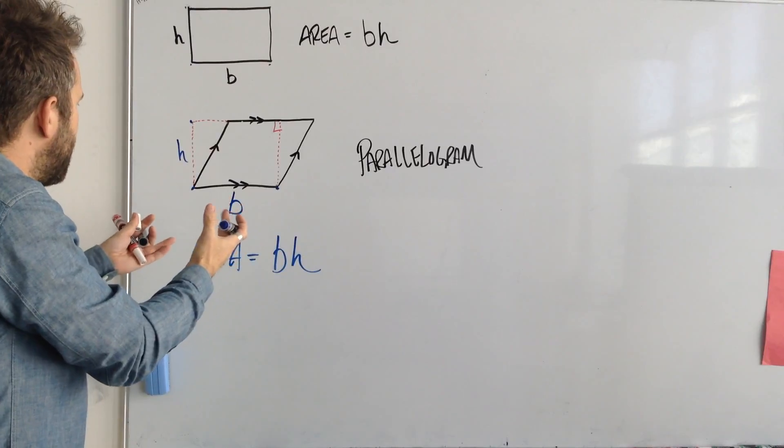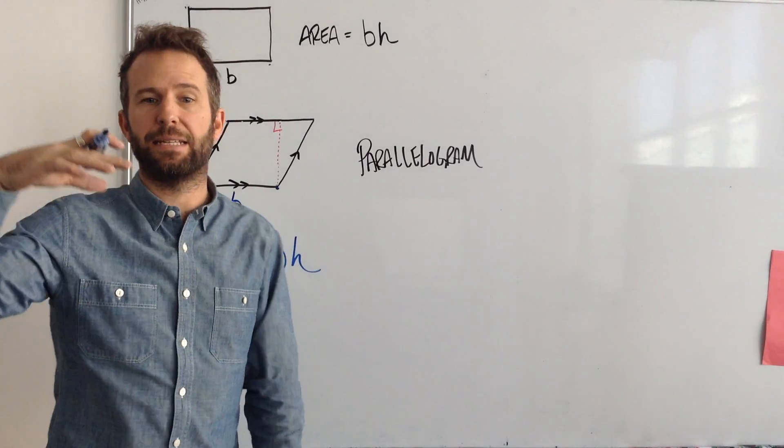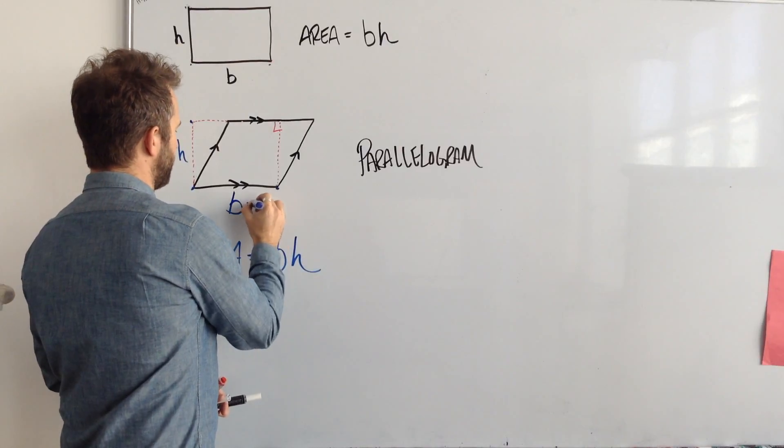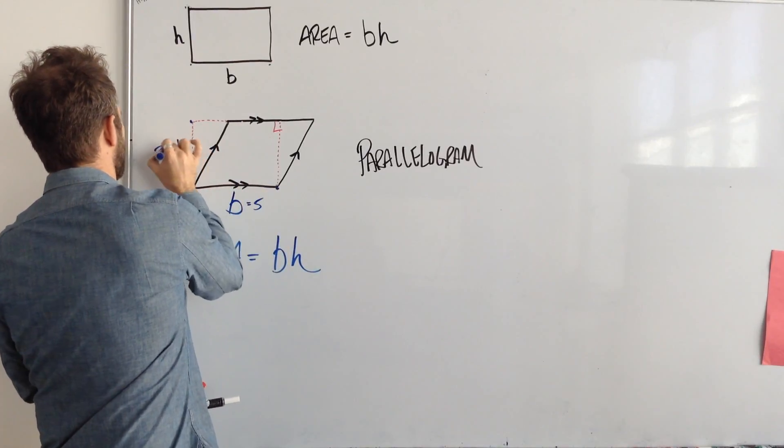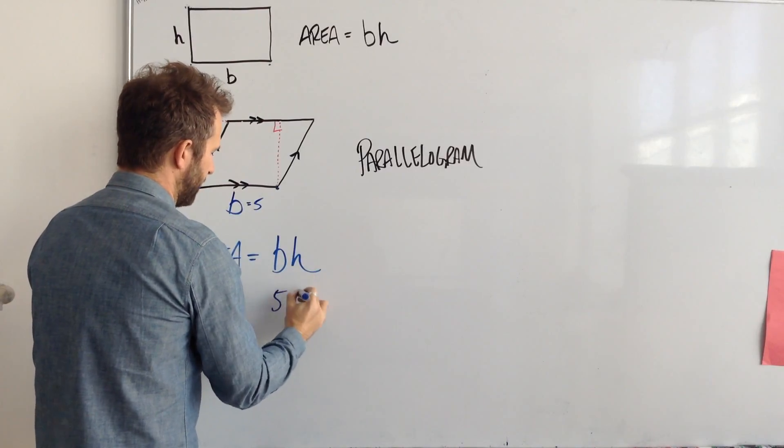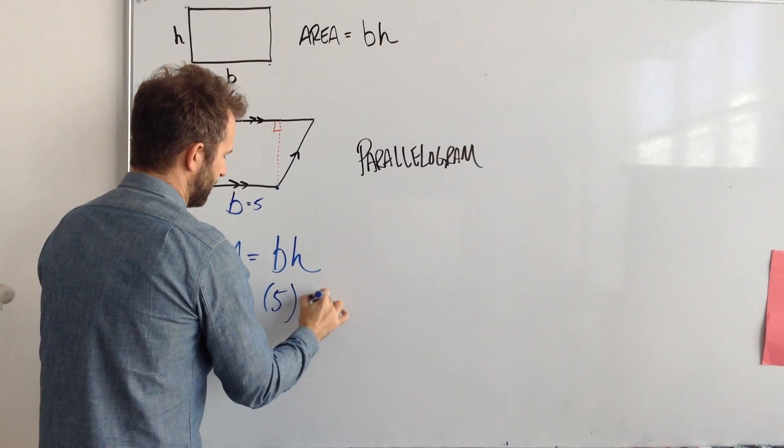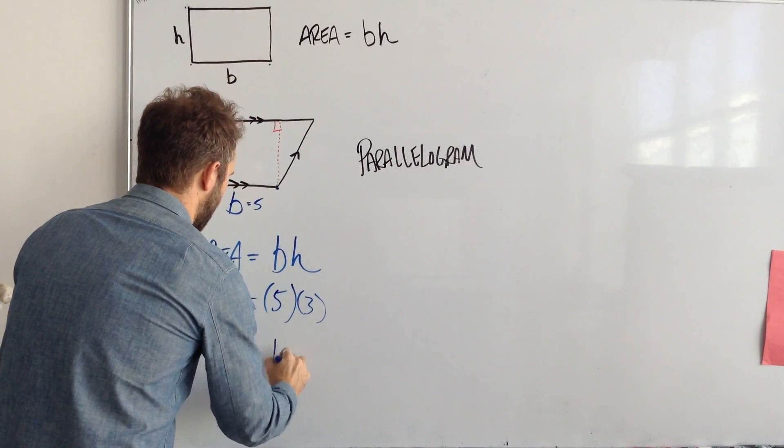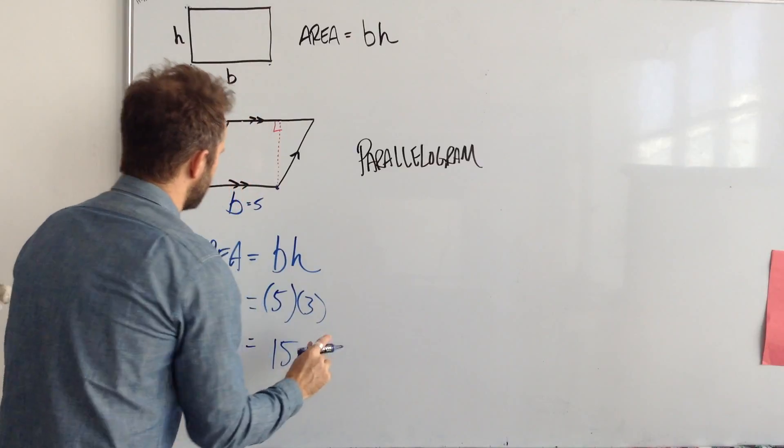So in this case, if our base is 5 and our height is 3, we would get the same idea. If our base is 5 and our height is 3, let's say it's in meters still, we would end up at 15 square meters.